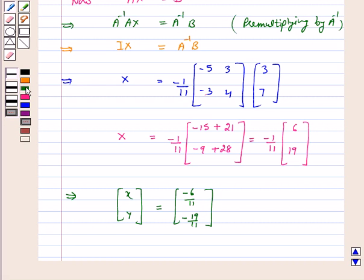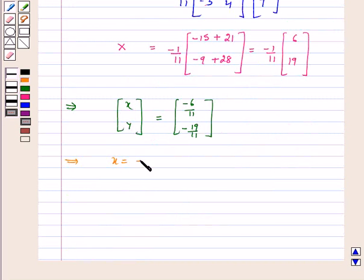So by equating the corresponding coefficients we get x is equal to minus 6 by 11 and y is equal to minus 19 by 11. So we have solved the above system of equations using matrix method. I hope the question is clear to you. Bye and have a nice day.